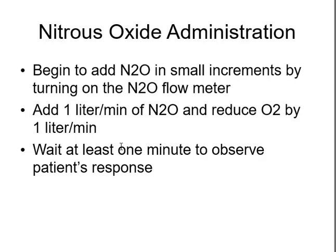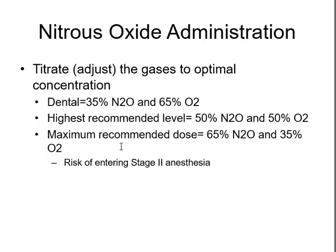Once tidal volume is established, begin to add nitrous in small increments — add one liter per minute of nitrous, but reduce the oxygen by one liter so the tidal volume remains the same. If you're at eight liters of oxygen and add one liter of nitrous, you back off the oxygen by one to keep the total at eight liters. Wait about a minute to see the patient's response, then titrate — meaning adjust the gases to the optimal concentration.